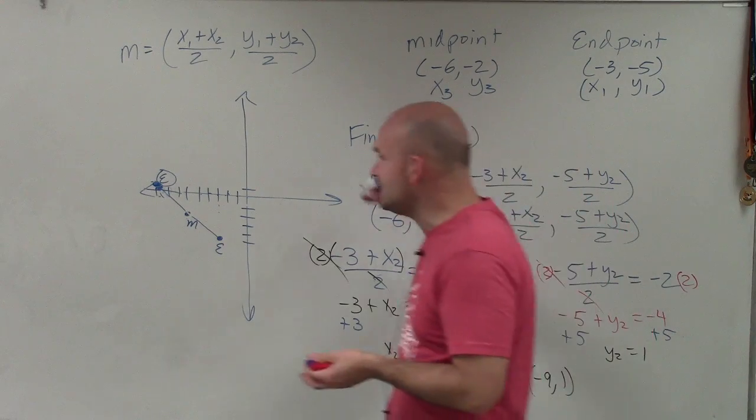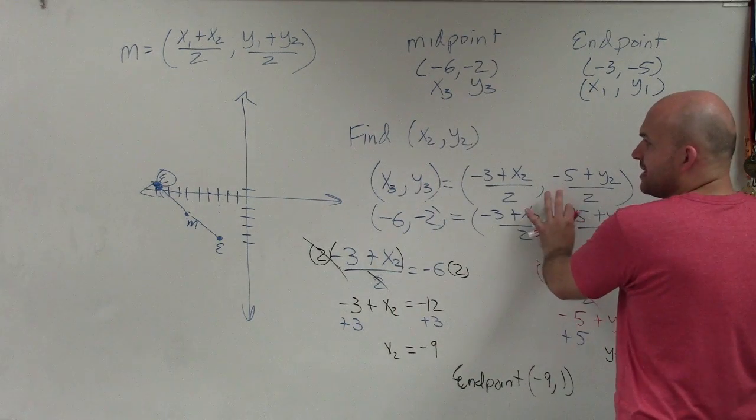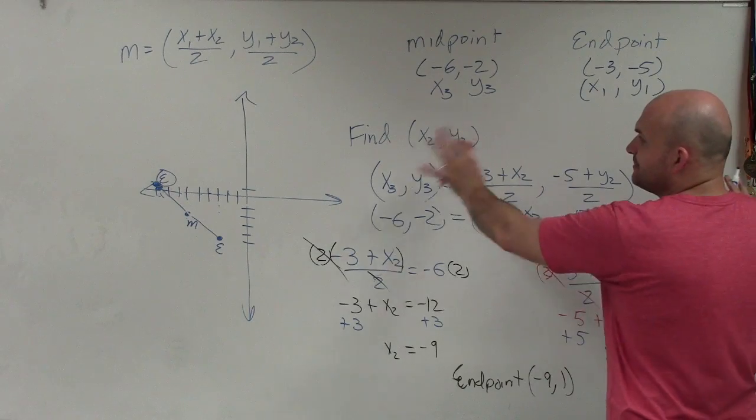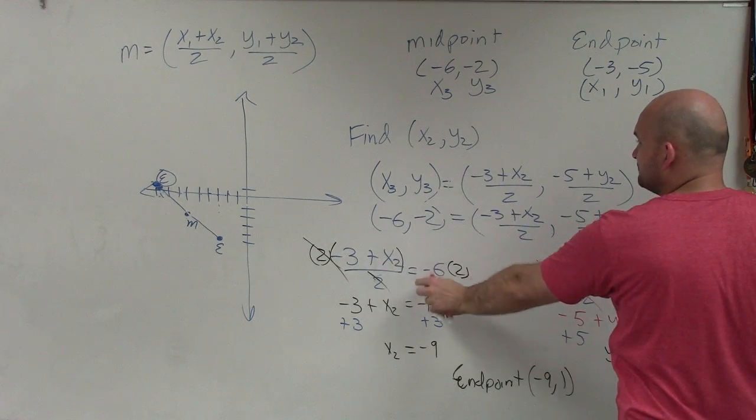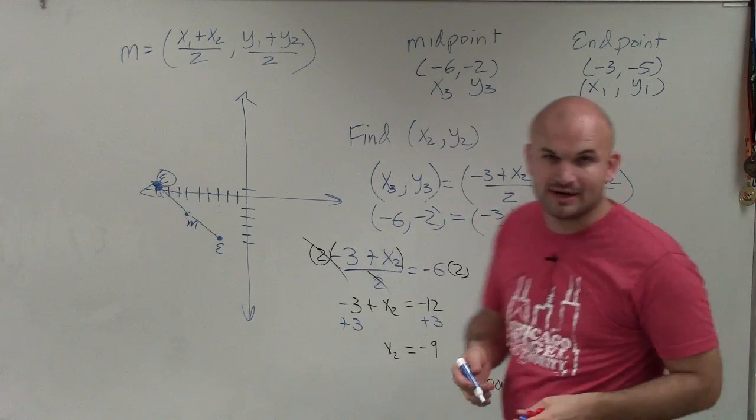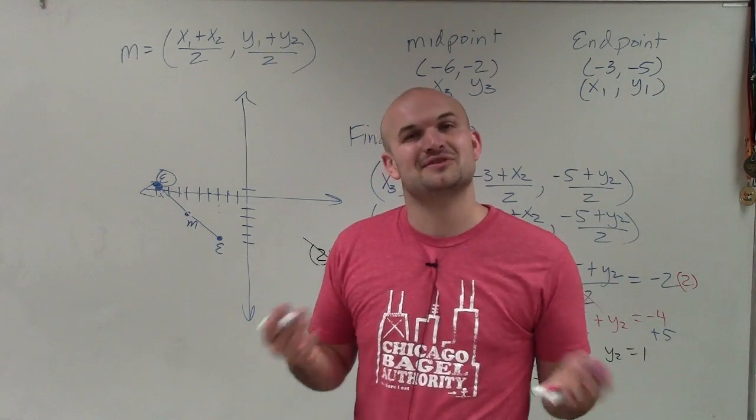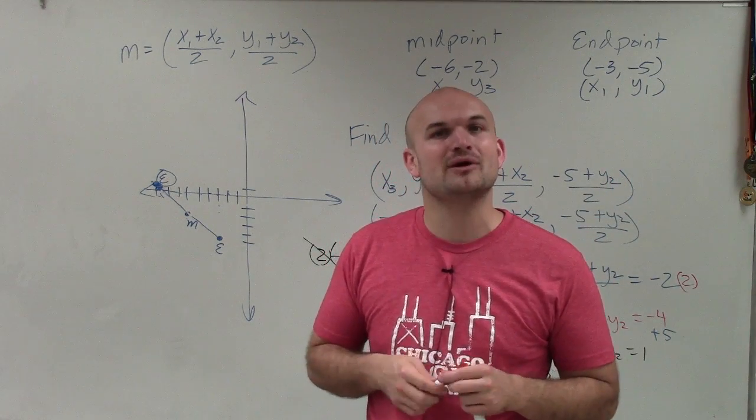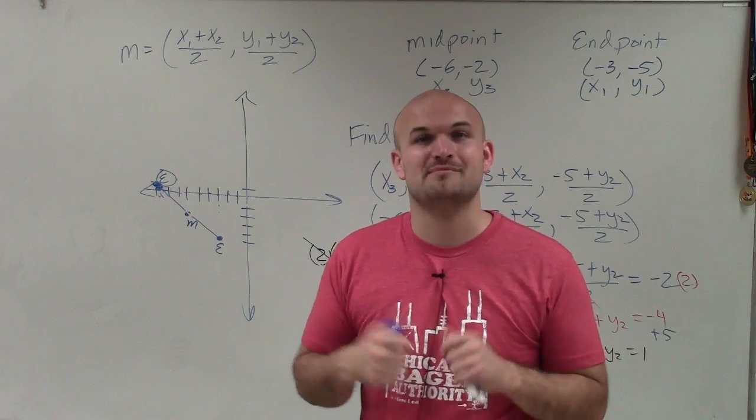So therefore, you can see by setting each of these coordinates in my midpoint formula, setting them equal to my midpoint, I can then solve for my missing coordinate of my endpoint. So there you go, ladies and gentlemen, that's how you find the endpoint when given one endpoint and a midpoint. Thanks.